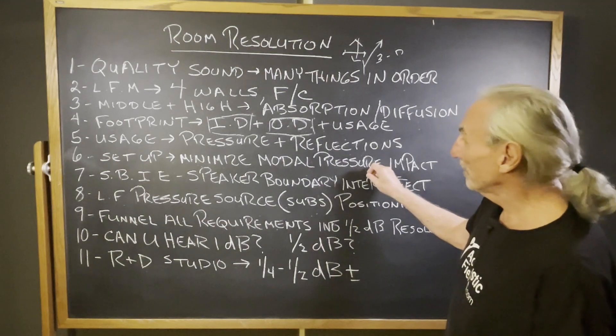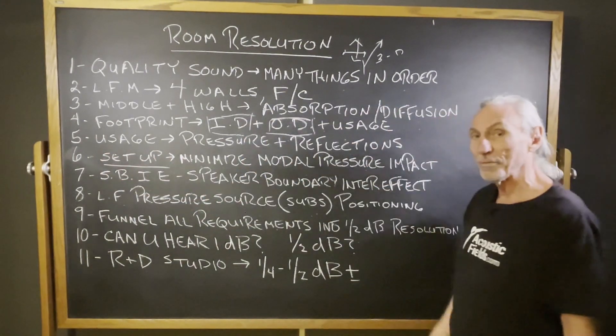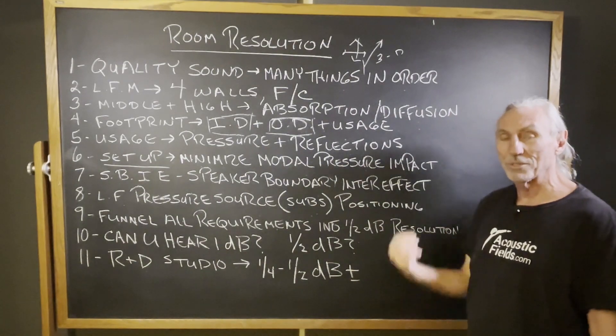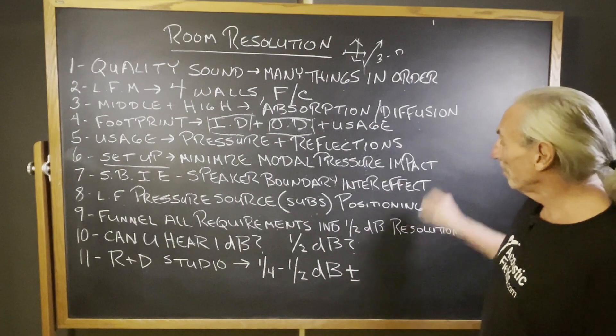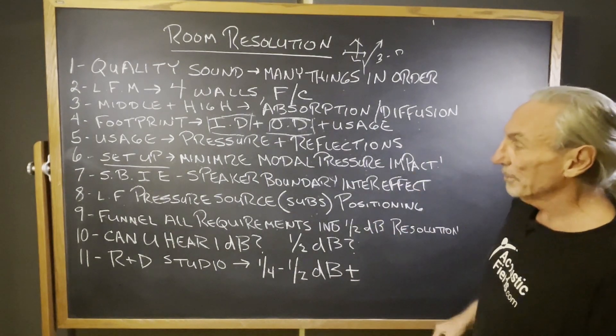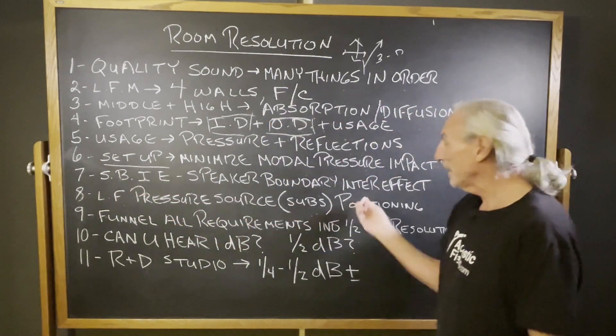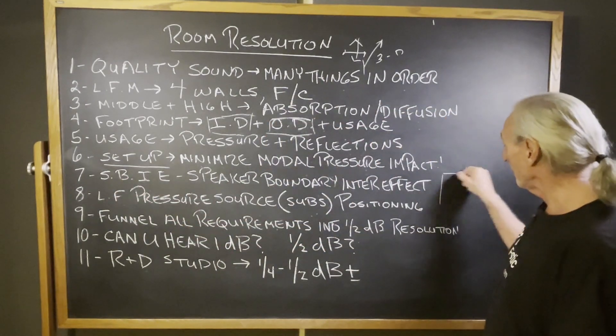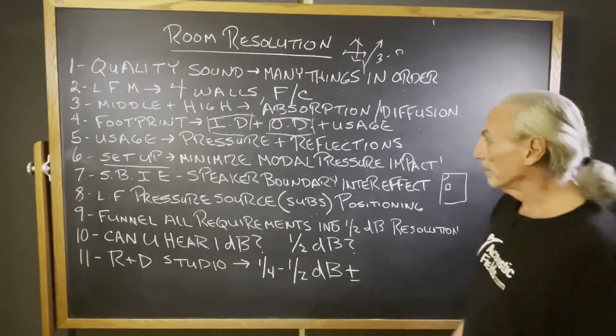So we want to minimize our setup when we do our setup. When we set up our speakers and our amplifiers, our pressure producing devices, because remember the room only sees energy. We want to minimize the modal pressure impact, okay? So the treatment that we have in the room will work really better then. Speaker boundary interference effect, that's from placing a speaker too close to a wall. Or worse yet in the corner.